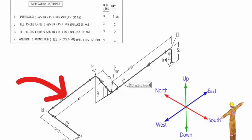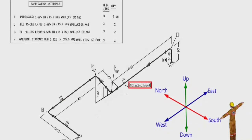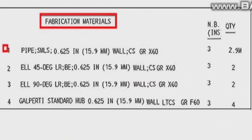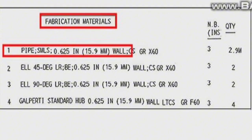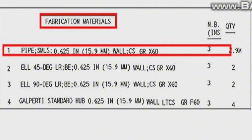This is the pipe isometric drawing. This pipeline consists of one spool only. This is the list of materials for fabrication used in this pipeline. Let's learn the materials on this pipe drawing. Detail number 1 was used in several places in the pipe drawing. Detail number 1: seamless pipe, wall thickness is 0.625 inches or 15.9 millimeters, carbon steel, grade is X60, size of pipe is 3 inches, 2.9 meters used.